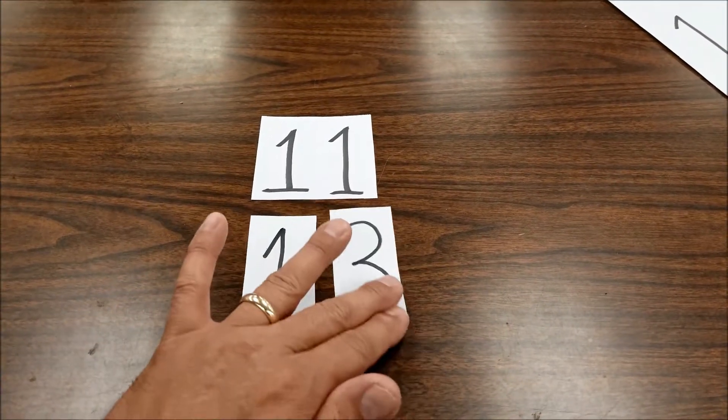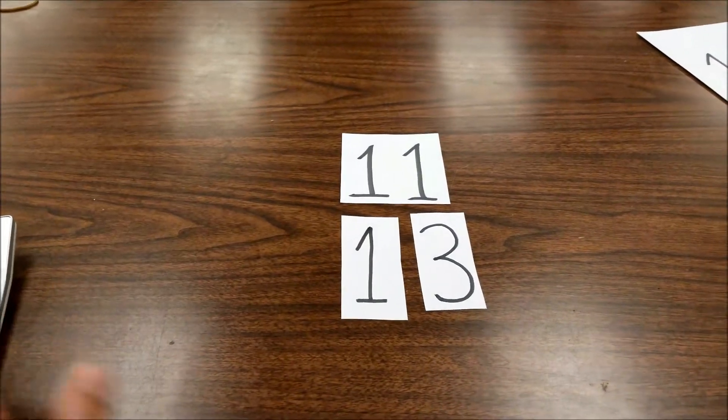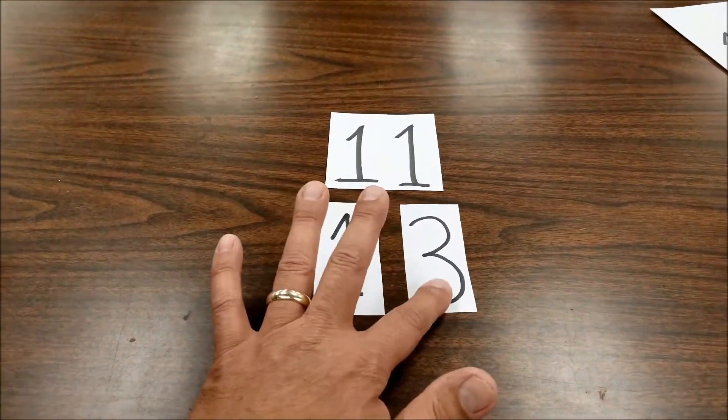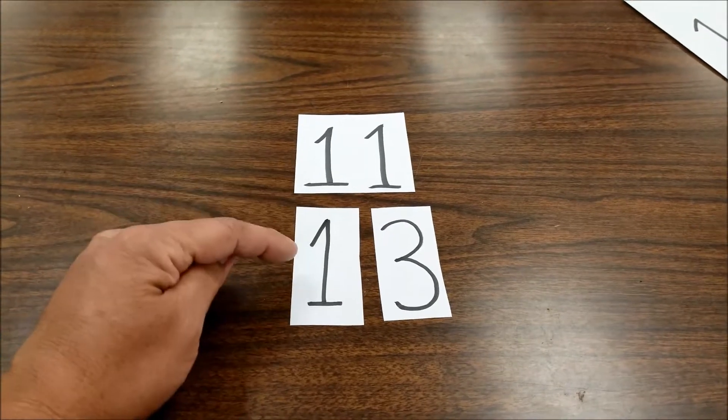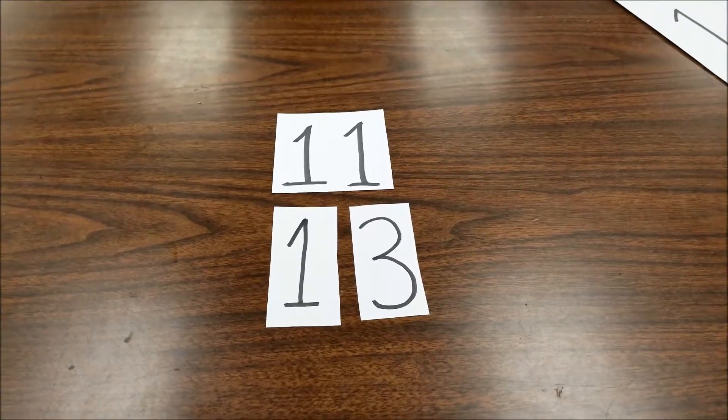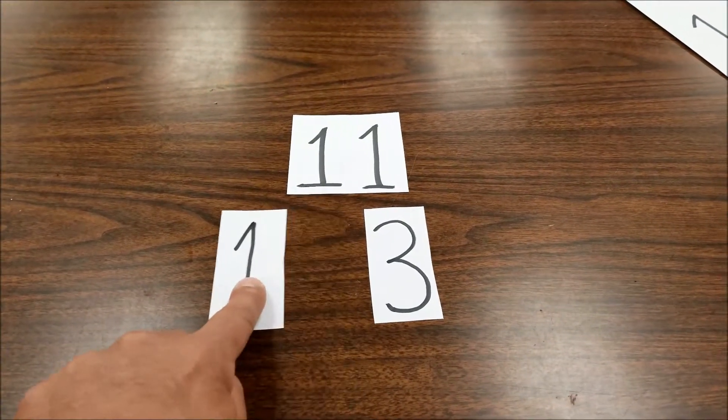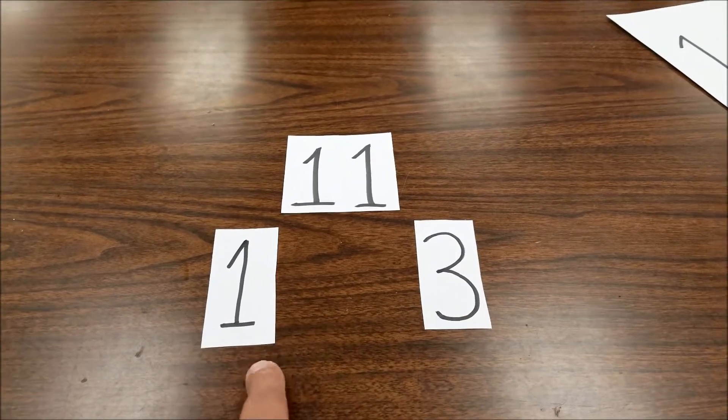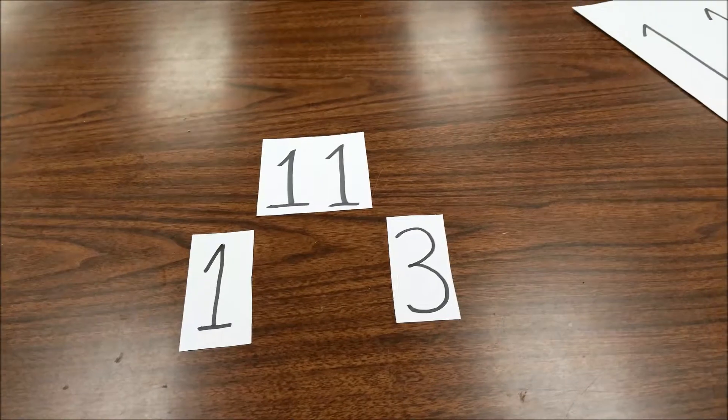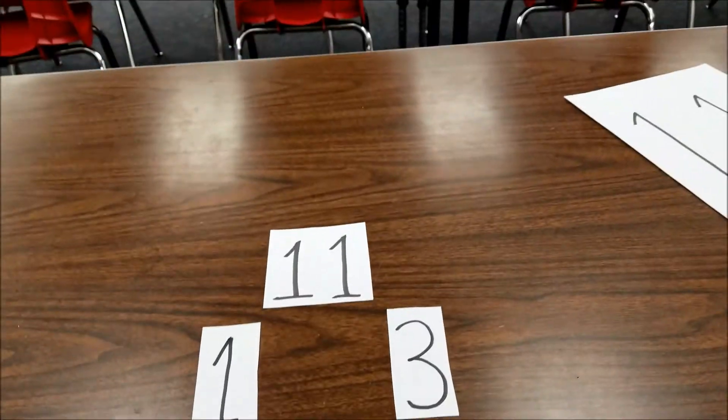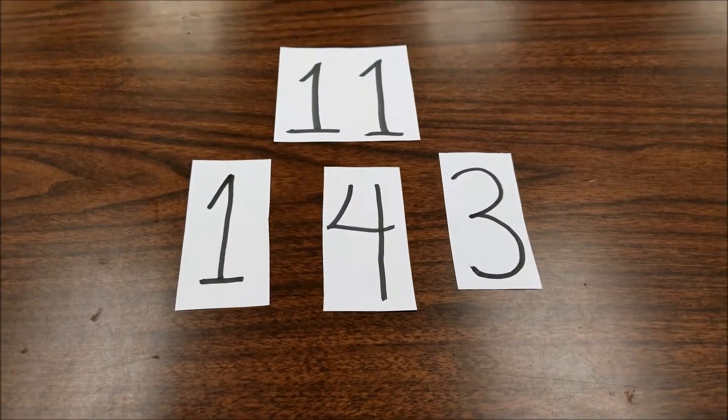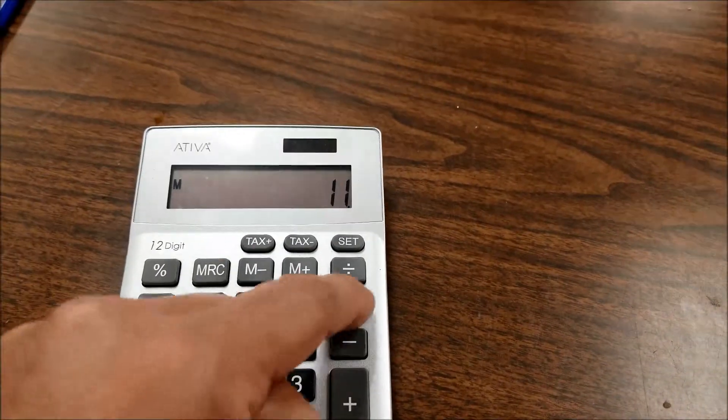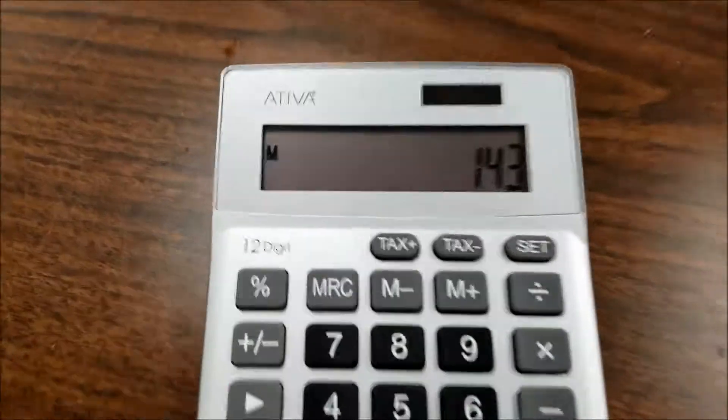Let me show you this here, and I have my trusty calculator here just to prove that everything's right. So let's pretend we're multiplying 11 by 13. Here's all you do: take the numbers and split them up like this, add the two numbers together. So 3 plus 1 is 4, and the answer is 143. Let's go to the calculator and check that out. 11 times 13 is 143. Okay. Bam.